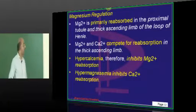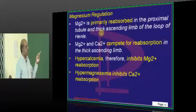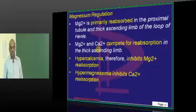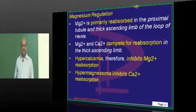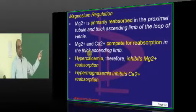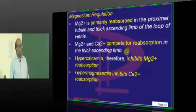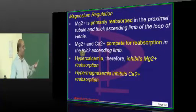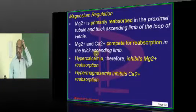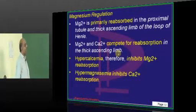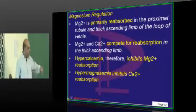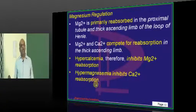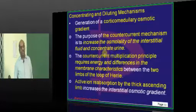How about magnesium regulation? Magnesium is mainly reabsorbed in the proximal tubule and thick ascending limb of loop of Henle. Magnesium and calcium compete with each other to get reabsorbed in the thick ascending limb. Can one electrolyte abnormality lead to the other? Yes — whenever there is hypercalcemia, it inhibits magnesium reabsorption and leads to magnesuria. Whenever hypermagnesemia is present, it inhibits calcium reabsorption and promotes calciuria, because both are divalent cations competing at the level of the thick ascending limb of loop of Henle.